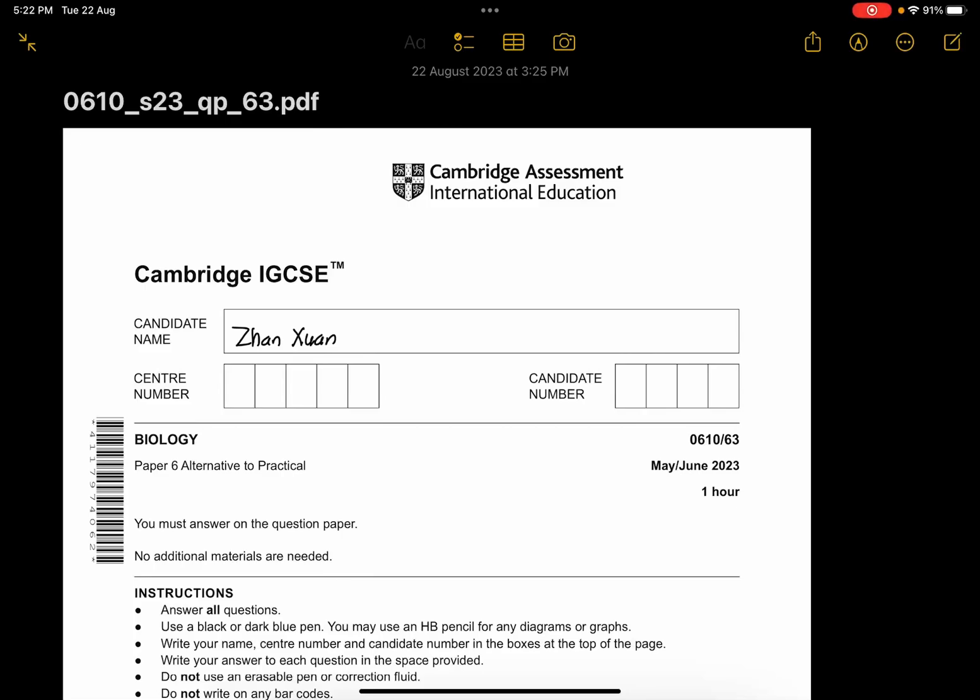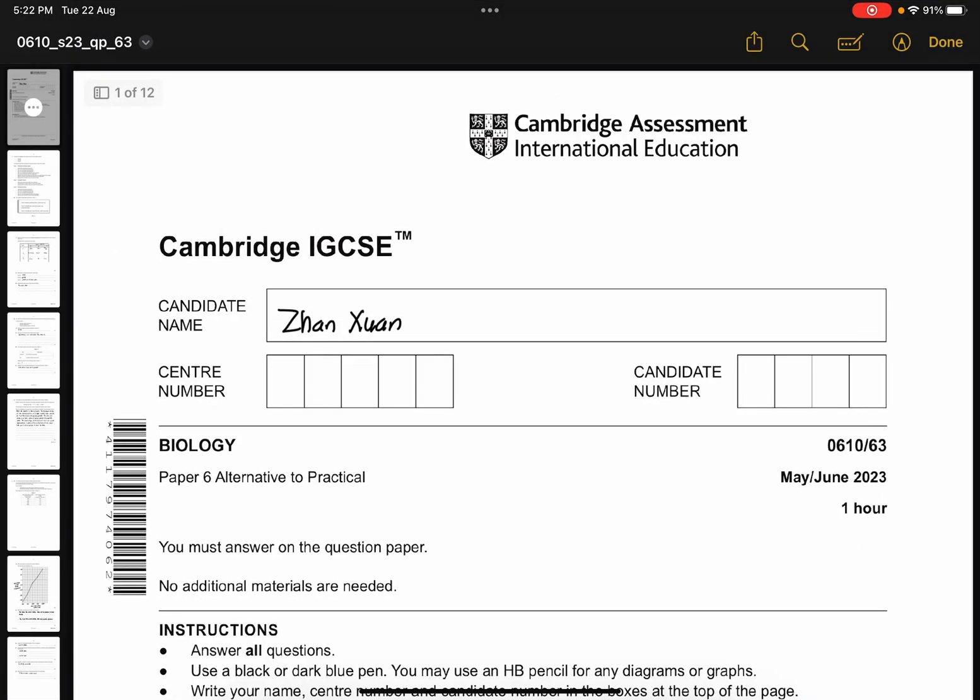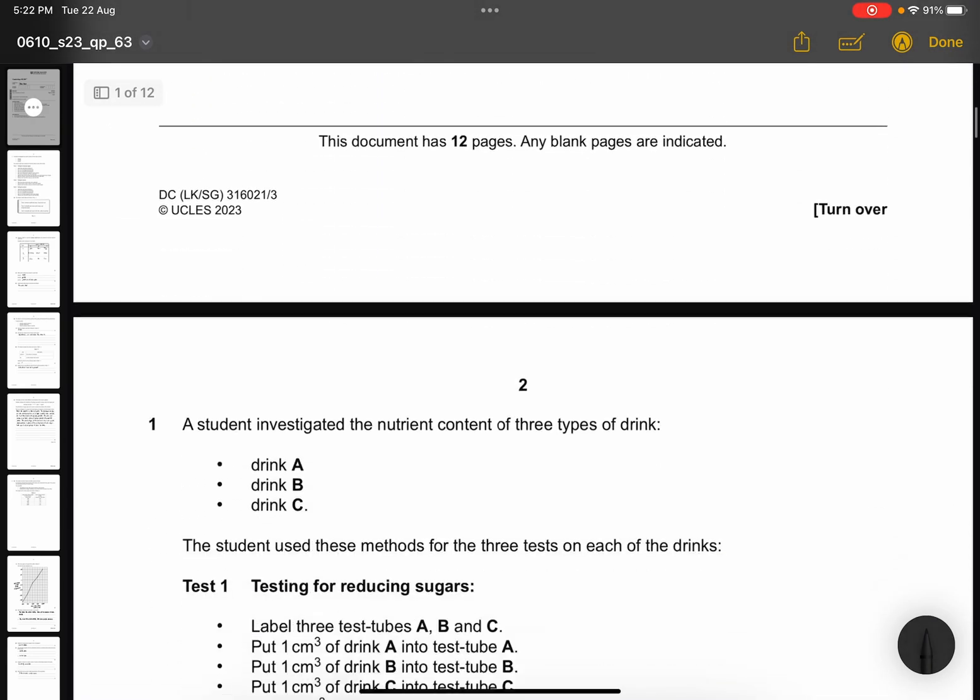Hey guys, welcome back to a new video by Biology with Zhang Shen. So today we are going to do the 0610-63 May-June 2023 paper 6, Alternative to Practical. The paper will be in the description box below, so make sure you check it out. Let's start solving this paper.